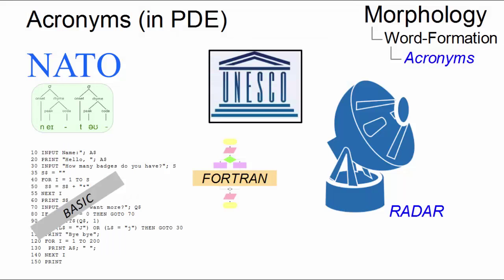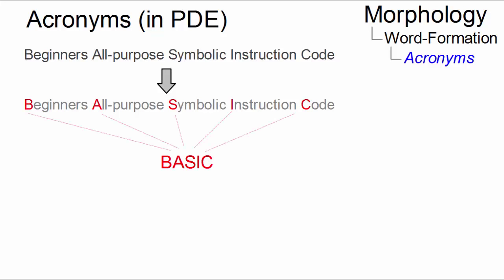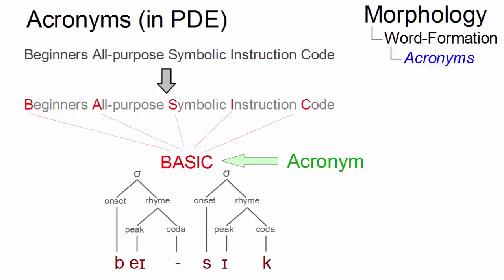A popular method of forming words in present-day English takes a multi-word expression such as Beginner's All-purpose Symbolic Instruction Code and takes its initial letters to form a pronounceable word with well-formed syllables. The result is referred to as an acronym.